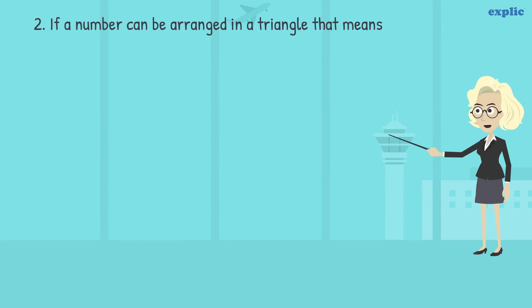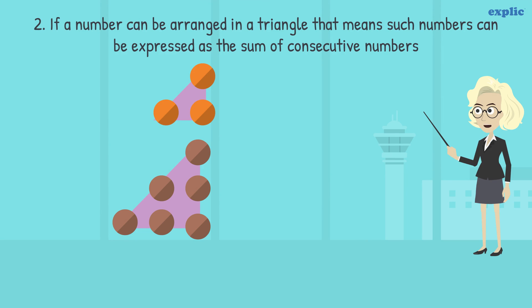Some numbers can be arranged in a triangle such as 3 and 6. These numbers can be expressed as the sum of consecutive numbers. For example, 3 can be written as 1 plus 2, and 6 can be written as 1 plus 2 plus 3.